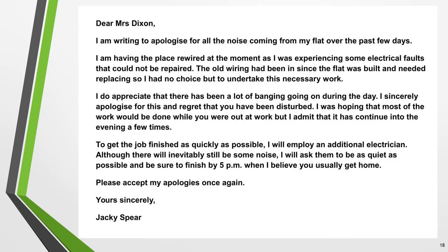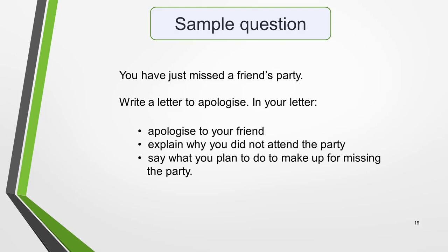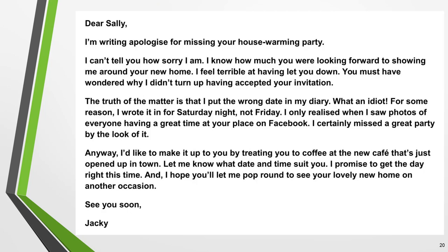Here's our finished letter of apology — pause the video and read through it. Note how all the elements come together and the ideas flow from one to the next; this is what you're aiming for in your letter. To get some practice, write a letter for this question: 'You have just missed a friend's party. Write a letter to apologise. In your letter, apologise to your friend, explain why you did not attend the party, and say what you planned to do to make up for missing it.' This letter is to a friend, so must be written in an informal tone and style. Use the planning structure I've just shown you before you start writing. Here's a sample letter — can you identify the language and grammar structures used to give it an informal tone?